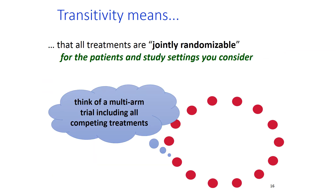When setting up the research question for a comparative effectiveness review with network meta-analysis, investigators should make sure that treatments included in the network are jointly randomizable — that is, one can imagine a multi-arm randomized trial that involves all treatments intended to be compared. This should be explicitly stated in the protocol of the systematic review.